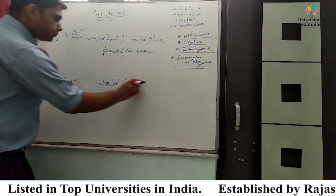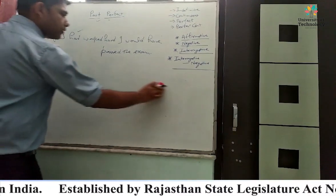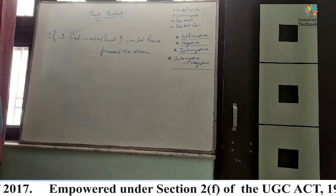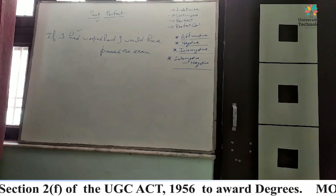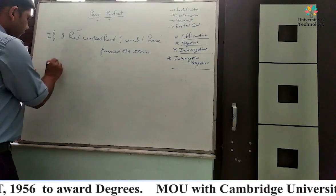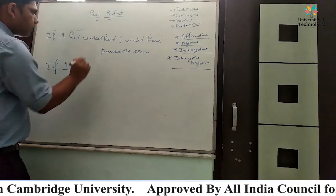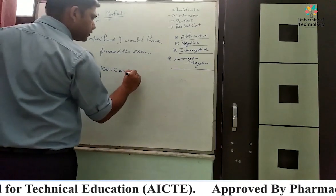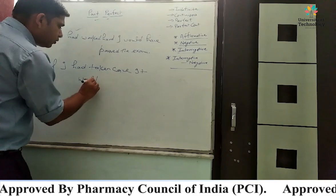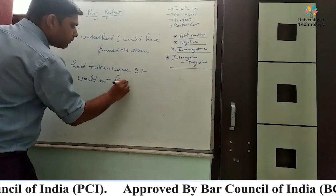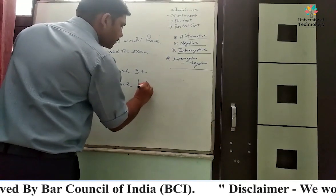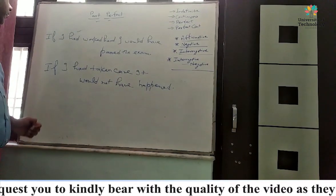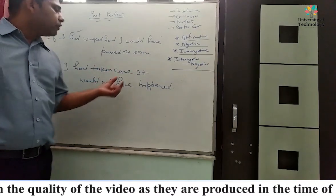One more sentence: 'Yadi maine dhyan diya hota to aisa nahi hota' — If I had taken care, it would not have happened. So the syntax is: if plus subject plus had plus verb third form plus object, subject plus would have plus verb third form plus object.